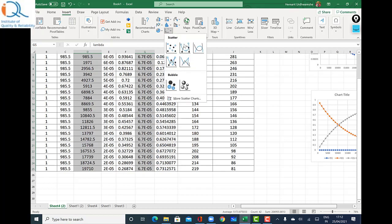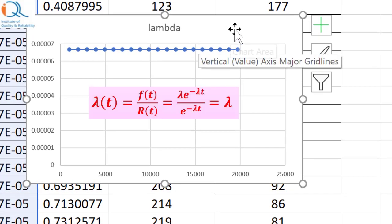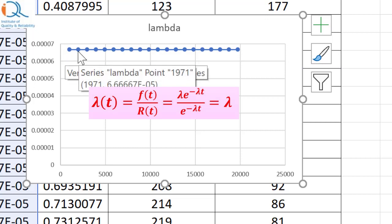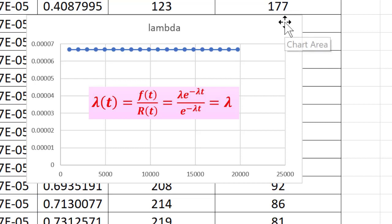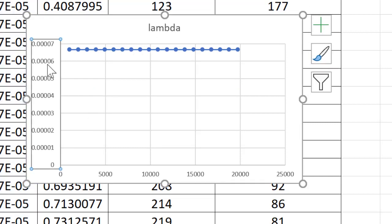As expected for exponential distribution the hazard rate is constant at 6.7 into 10 raise to minus 5. And therefore we see a horizontal straight line at this level. The hazard function is constant at this level.